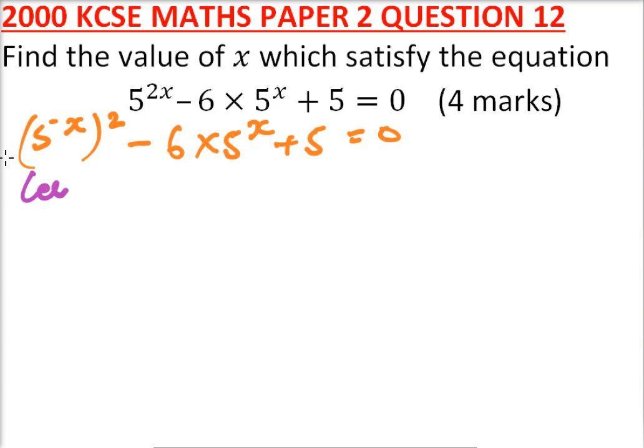From there, I should write y is equals to 5 to power x. We can replace our 5 to power x with y, so we end up with y squared minus 6y plus 5 is equals to 0.